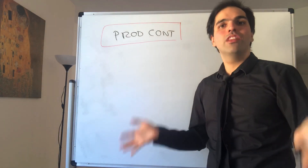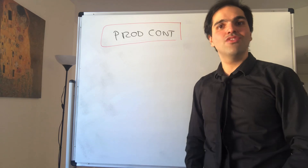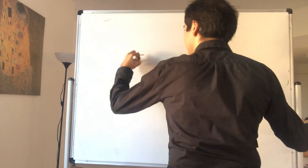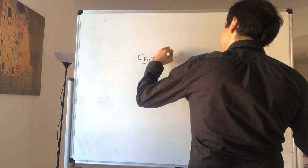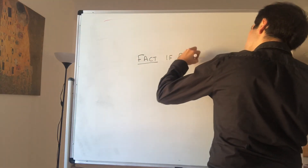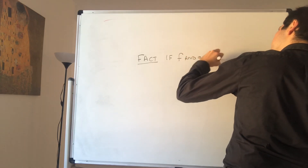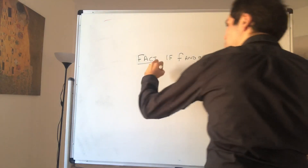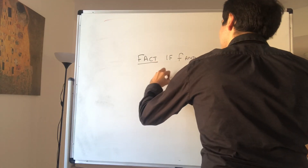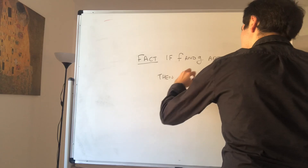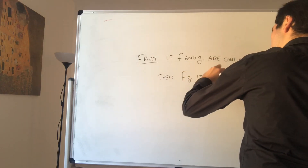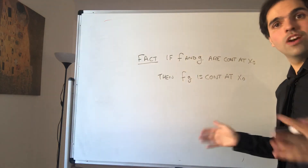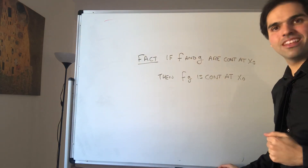Thanks for watching. Today I will show that the product of two continuous functions is continuous. So let's prove that if f and g are continuous at a point x₀, then the product fg is continuous at x₀. We'll prove it two ways: one with sequences and one with epsilon and deltas.